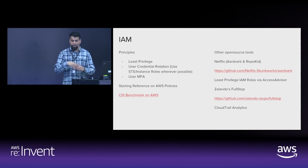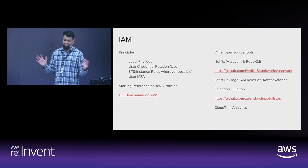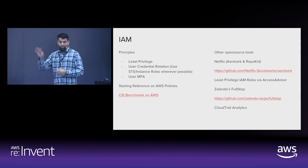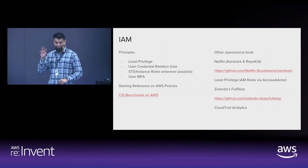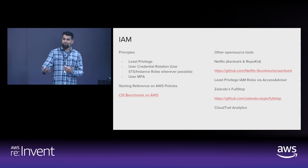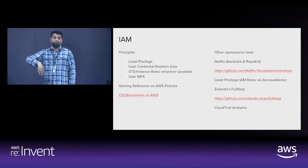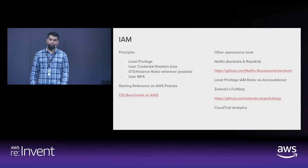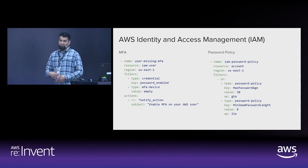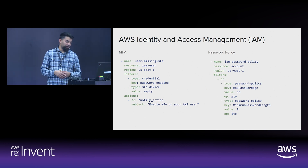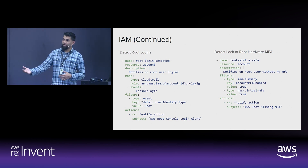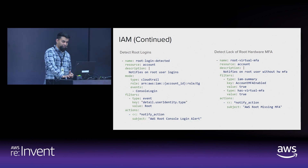Next topic is IAM — the general principle of least privilege. There are tools that can help; Netflix is screen scraping the IAM Access Advisor to give you that information in machine-readable form. One approach is to let developers have a wide-open role in dev, see what they use, and then craft your production rollout from that based on actual usage. Custodian can do the basics: make sure you've got a good password policy, make sure everyone has MFA enabled, detect root login and send notifications, and make sure root has hardware MFA.